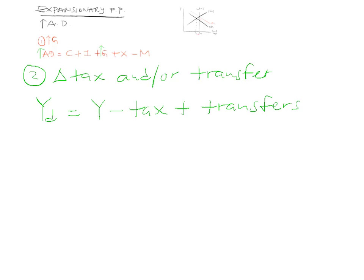So what can you do here? You can reduce tax. When you reduce the tax, you will increase disposable income, you will increase consumption, and hence you will increase aggregate demand.